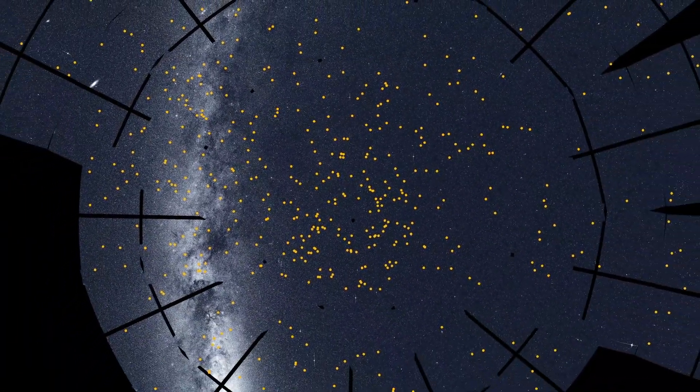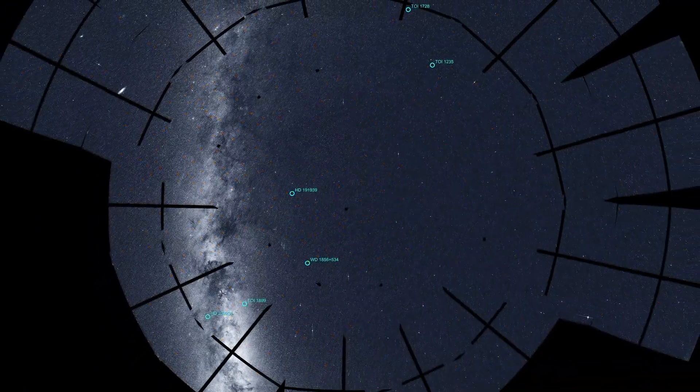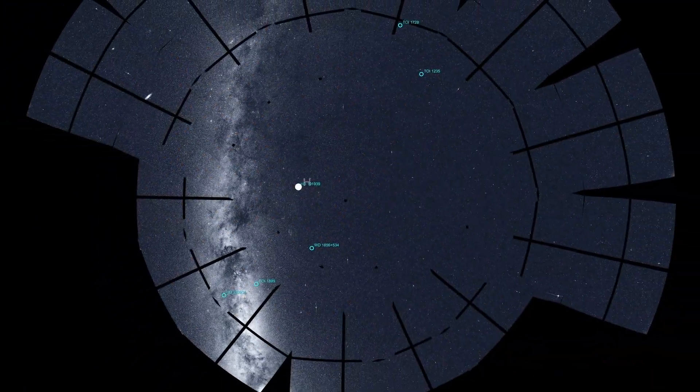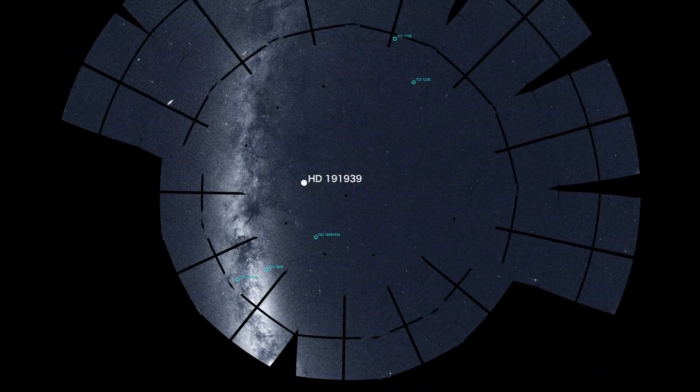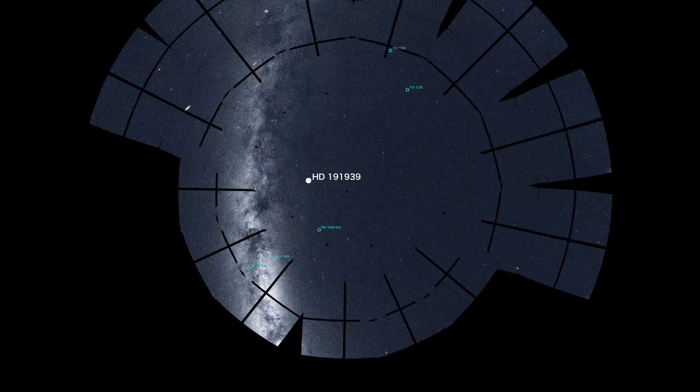TESS has already found a few northern stars hosting planets. One, named HD191939, possesses a trio of Neptune-size worlds.